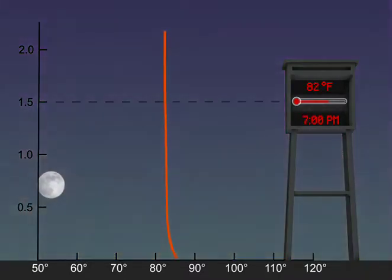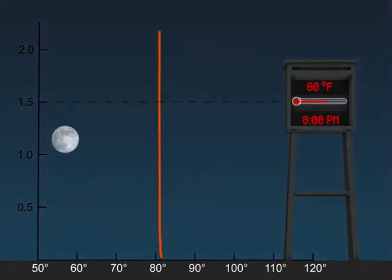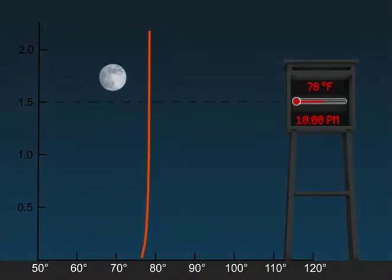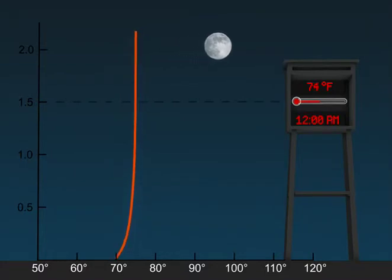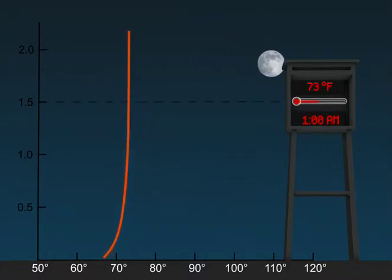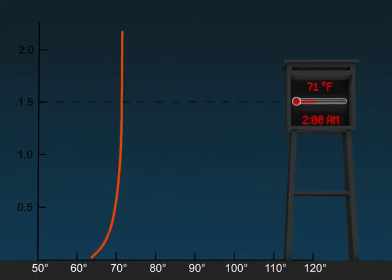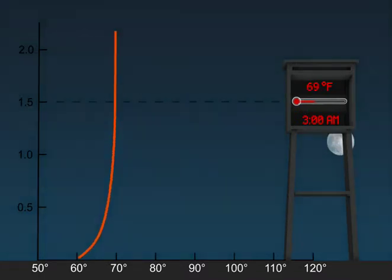At night, the ground cools more quickly than the air. This situation causes the air in contact with the ground to become colder than the air several meters above, and a temperature inversion forms just above the Earth's surface.